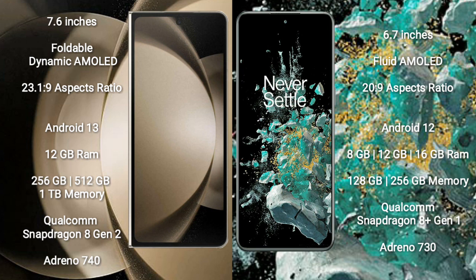Samsung Galaxy Z Fold 5 comes with 12GB RAM and 256GB, 512GB, or 1TB internal storage, with a Qualcomm Snapdragon 8 Gen 2 processor and GPU Adreno 740. OnePlus 10T comes with 8GB, 12GB, or 16GB RAM and 128GB or 256GB internal storage, with a Qualcomm Snapdragon 8 Gen 1 processor and GPU Adreno 730.